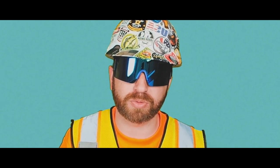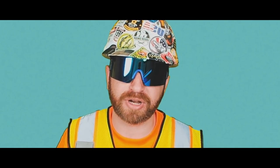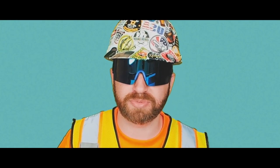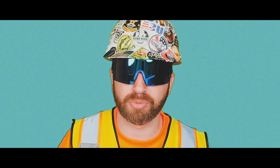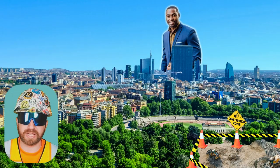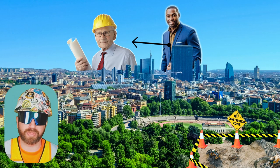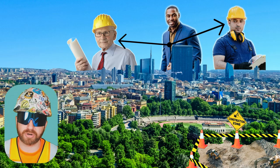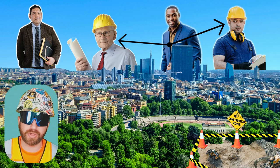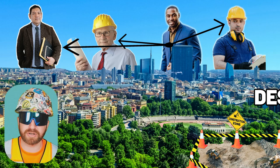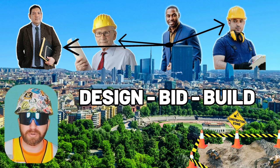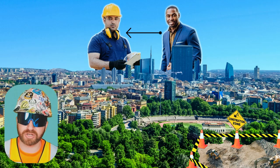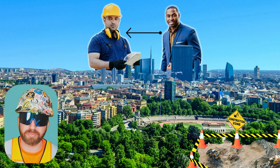The rest of the companies and individuals in this video will have different relationships with one another depending on the type of contract established at the beginning of the project. For example, an owner can hold a contract with an architect, a separate contract with a general contractor, and a third contract with an owner's representative. This is considered a design-bid-build delivery method.